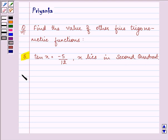Let us start with our solution. The value of tan x is given to us as -5/12. Therefore, cot x will be -12/5.